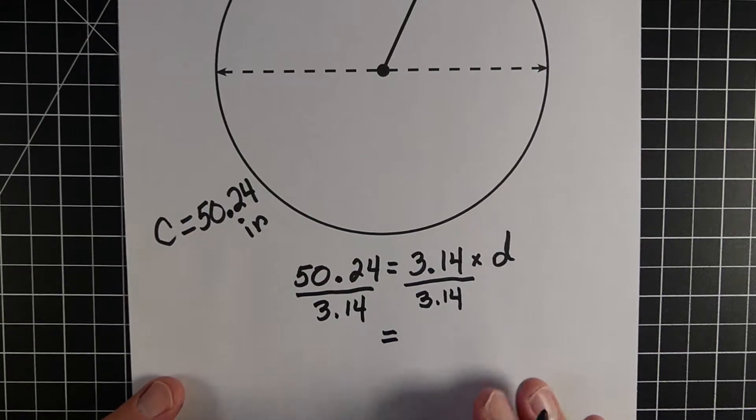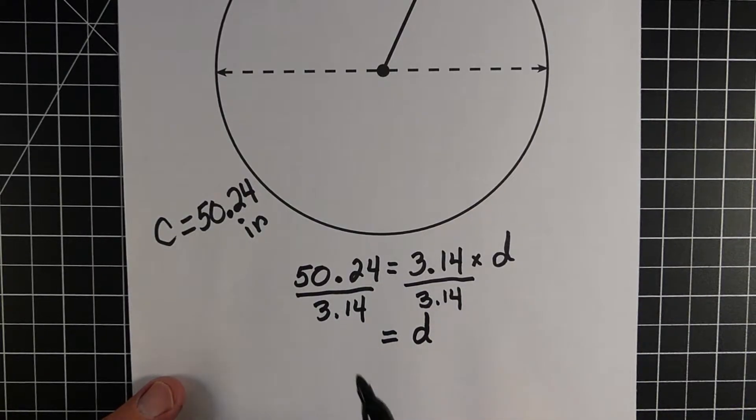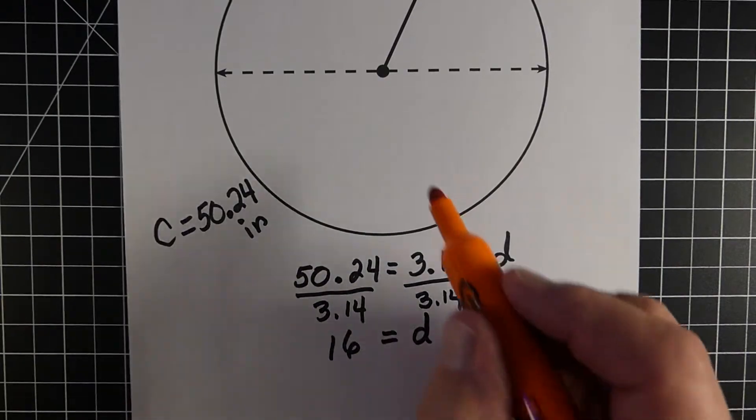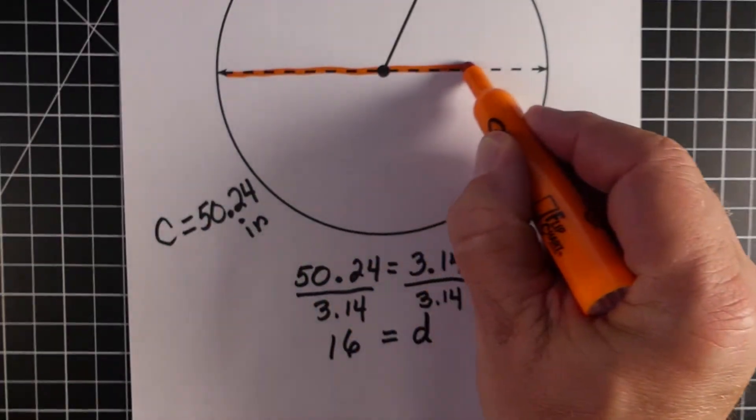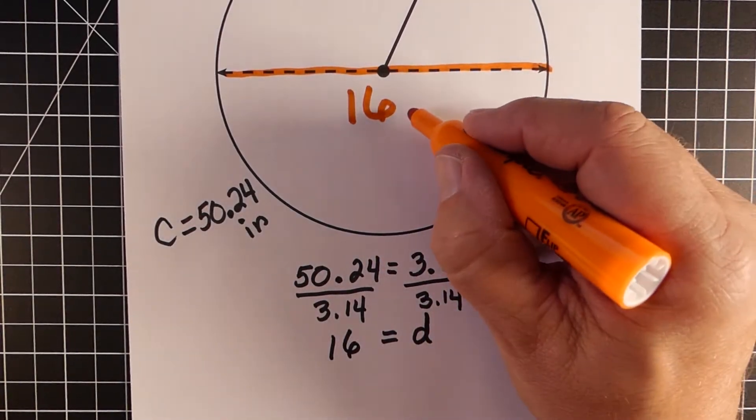So when we do our division, the right side, we're just going to be left with the letter D, because the 3.14s will cross each other out. On the left side, we're going to take the 50.24, divide by 3.14, and we get 16. So our diameter would be 16 going across, or in this case, 16 inches.